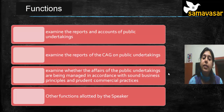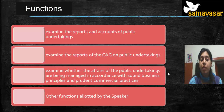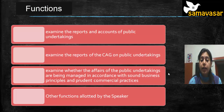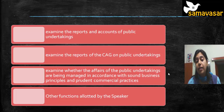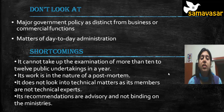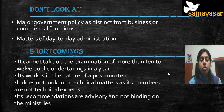The Committee on Public Undertakings examines the reports and accounts of public undertakings, examines the CAG reports on public undertakings, and examines whether the affairs of public undertakings are being managed in accordance with sound business principles and prudent commercial practices, along with other functions allotted by the Speaker. It looks at both the financial records and the business functioning of public undertakings.